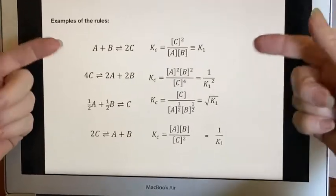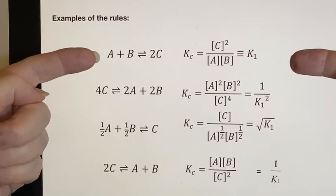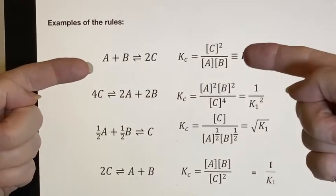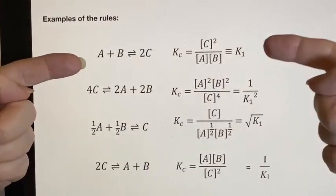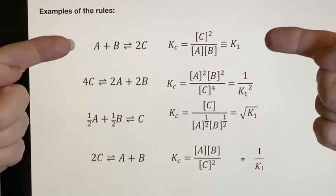Here are a few more examples. If this is our original equation that A plus B is gonna become 2C, we would end up being able to say that K sub C is C squared over AB, and that would be defined as K sub one. So this is our basic one.